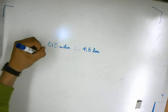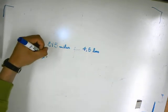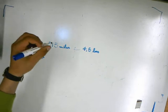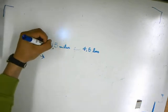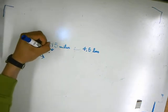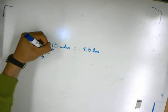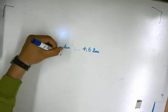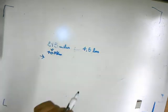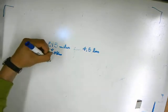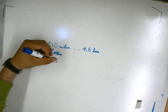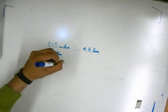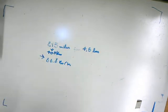We change the miles to kilometers, so 215 miles is 400 kilometers. And 400 kilometers in 4.5 hours is an average speed of 88.8 kilometers per hour.